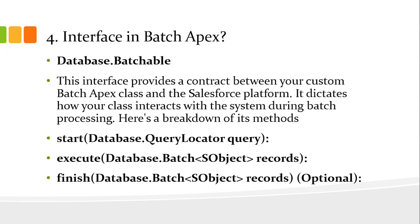What is the Database.Batchable interface in Batch Apex? Database.Batchable is the interface that provides the contract between your custom Batch Apex class and the Salesforce platform. It defines how your class interacts with the system during batch processing. The three methods are: start (Database.QueryLocator query), execute (Database.BatchableContext, list of records), and finish (Database.BatchableContext).